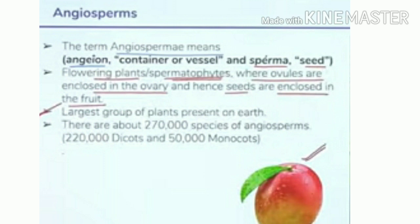Division Angiospermia is the largest group of plants. There are about 270,000 species of angiosperms included in this division, of which about 220,000 are dicot species and 50,000 are monocot species. This makes it the largest plant group.